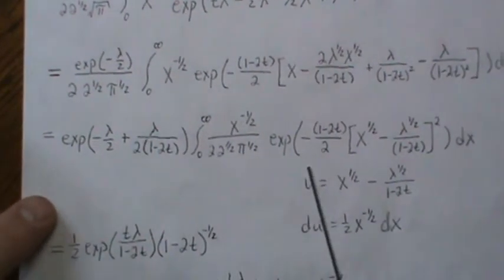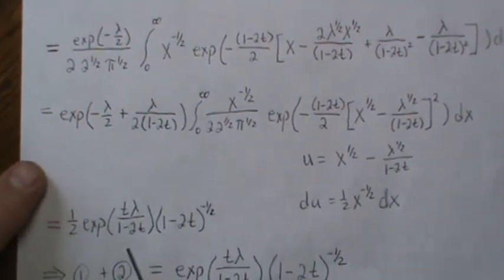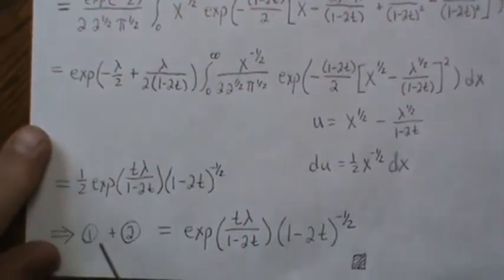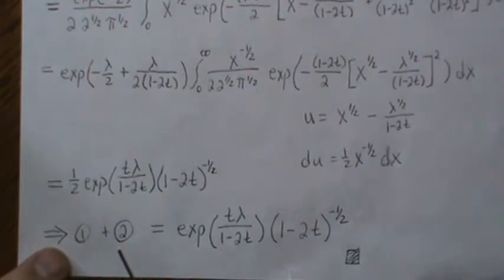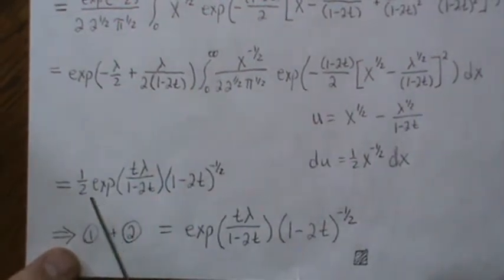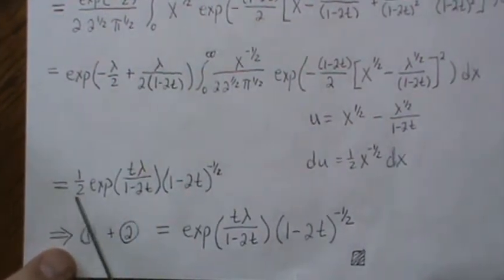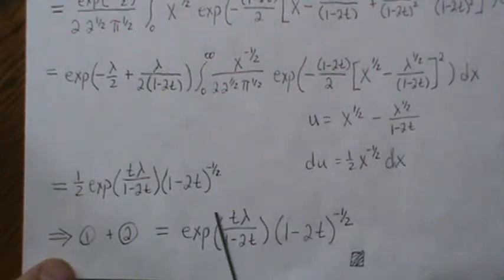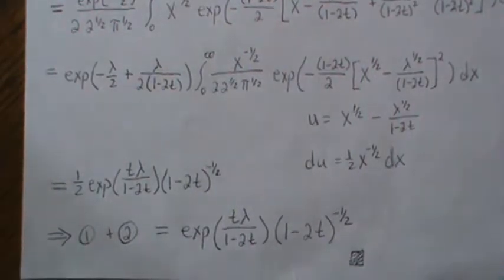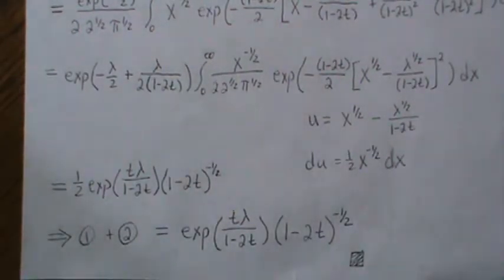Then this, we make it integrate to 1 and you're left with this. Now, when we add 1 and 2, we get, and this is the same piece, but both of them have a one-half, so it ends up just being a whole. And that's it. So that's the moment-generating function for a 1-degree non-central chi-square distribution.